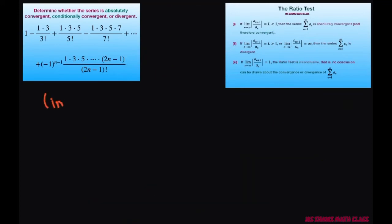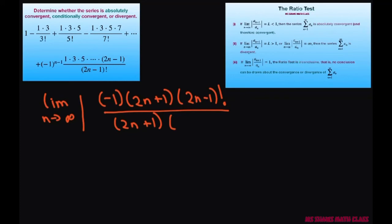So let's rewrite this as simplifying the limit as n approaches infinity absolute value of negative 1. And then we're going to have 2n plus 1 times 2n minus 1 factorial divided by 2n plus 1. And then we have to keep going down, keep subtracting 1, 2n, and then we have 2n minus 1 factorial.